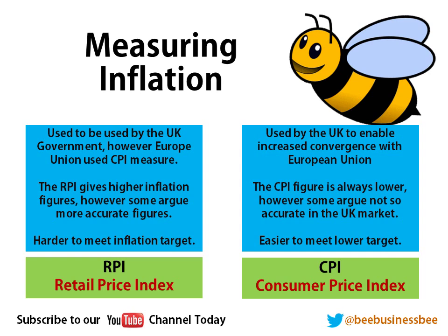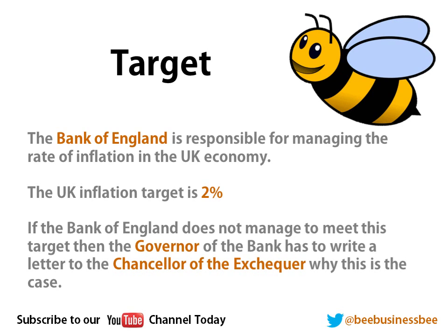It tends to be a lot easier to meet an inflation target when you are looking at CPI. The current target set by the UK government is 2%, and the Bank of England is responsible for managing that rate. If inflation doesn't hit that target, the Governor of the Bank of England has to write a letter to the Chancellor to explain why he hasn't been able to achieve that figure. This system happens every single month when they sit and review the figures and try and keep them on target.